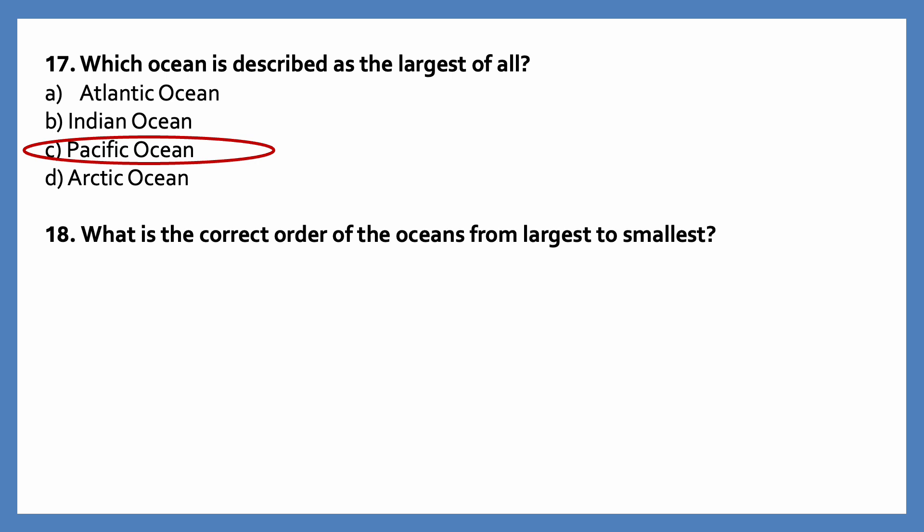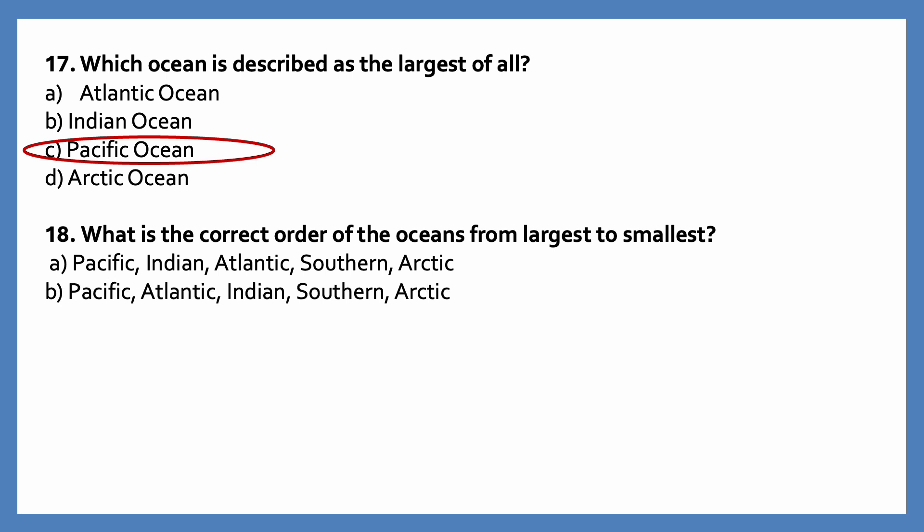What is the correct order of the oceans from largest to smallest? The correct order is Pacific, Atlantic, Indian, Southern, Arctic.